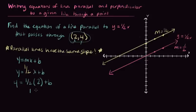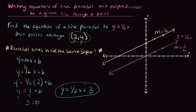And then we can solve for b. So 1 half of 2 is 1. So 1 plus b equals 4. Subtract 1 from both sides. So b equals 3. So our final answer would be y equals 1 half x plus 3. And that is how we find the equation of a line parallel to a given line that passes through a point.